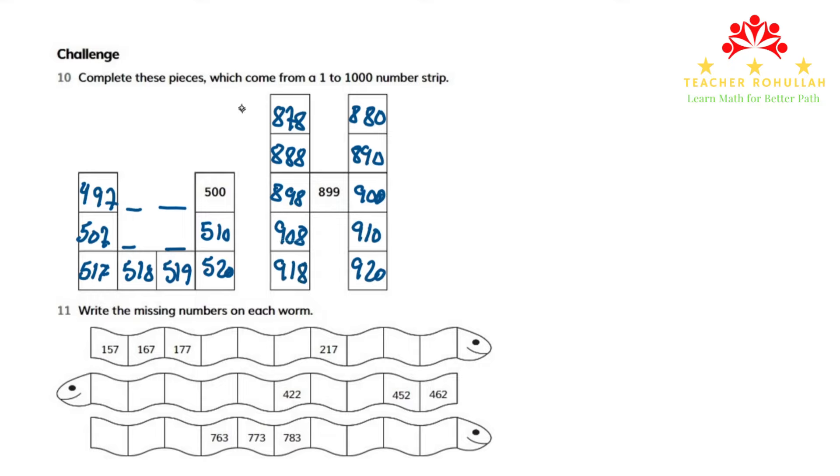This is how we can use numbers 1 to 1000 strip. That we consider as 1 to 10, 11 to 20, 21 to 30, 31 to 40, and then coming down 991 to 1000. This is how the number strip is formed.